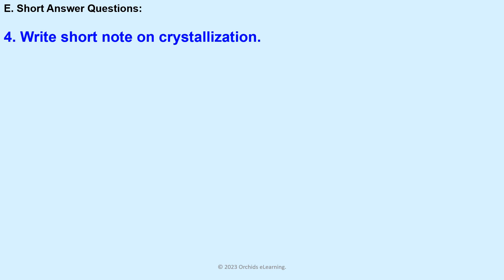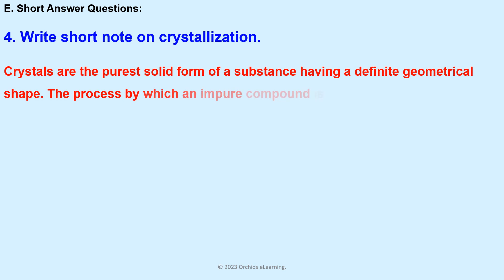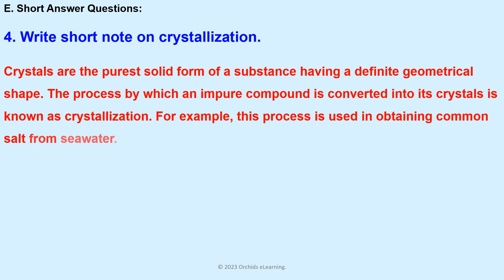Write a short note on crystallization. Crystals are the purest solid form of a substance having a definite geometrical shape. The process by which an impure compound is converted into its crystals is known as crystallization. For example, this process is used in obtaining common salt from sea water.